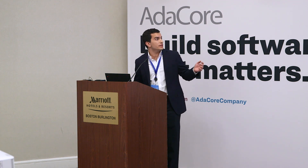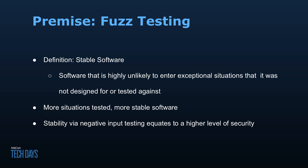Before we talk about fuzzing, I find it helpful to zoom out a little bit and talk about testing in general. One of the main goals of testing is to make your software more stable — software that's highly unlikely to enter exceptional situations it was not designed for nor tested against. Logic follows that if you want more stability, test in more exceptional situations, and that's exactly what fuzzing does.